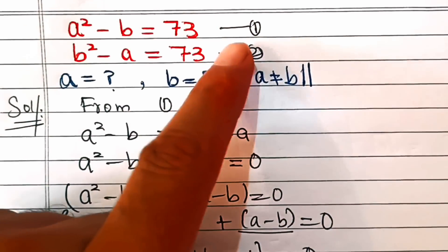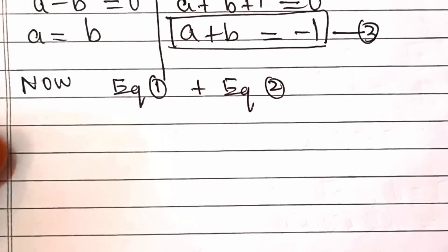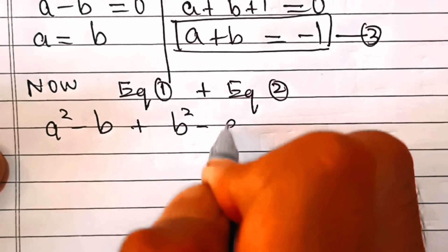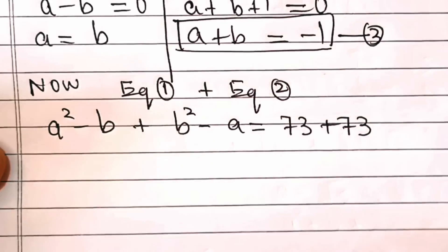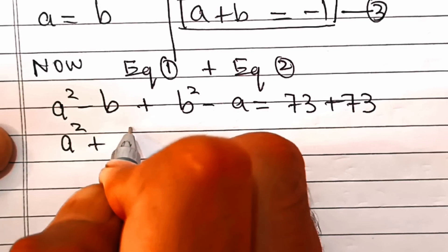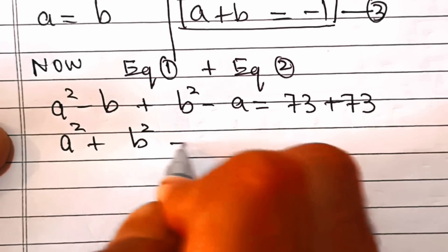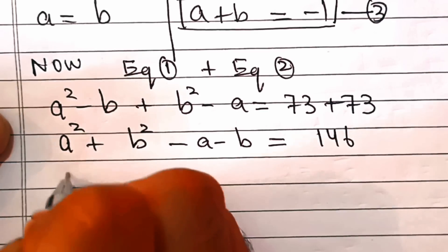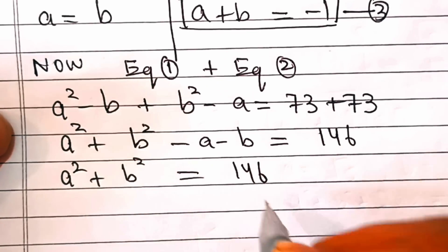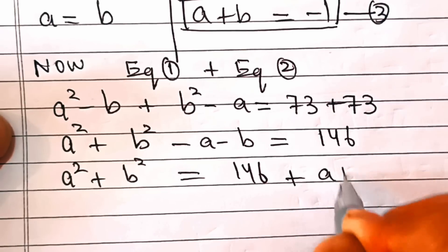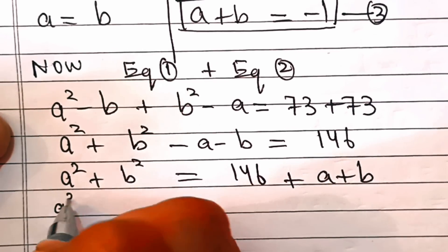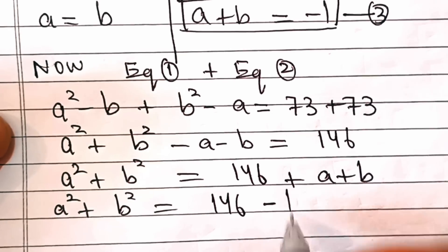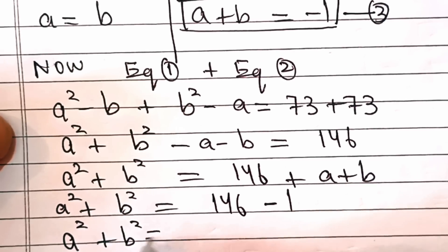Now let's add equation 1 and equation 2: a squared minus b plus b squared minus a equals 73 plus 73. That gives a squared plus b squared minus a minus b equals 146. Moving minus a minus b to the right side becomes plus a plus b. From equation 3, a plus b equals minus 1. So a squared plus b squared equals 146 plus minus 1, which is 145.